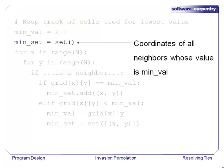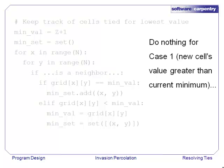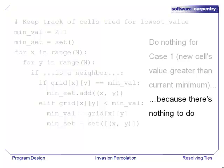We then initialize our set of coordinates to be empty because we haven't actually looked at any cells yet. Inside the loop, if the cell is a neighbor of the filled region, there are three cases to consider. In the first case, where the value is greater than the minimum seen so far, we do nothing because there's nothing to do.